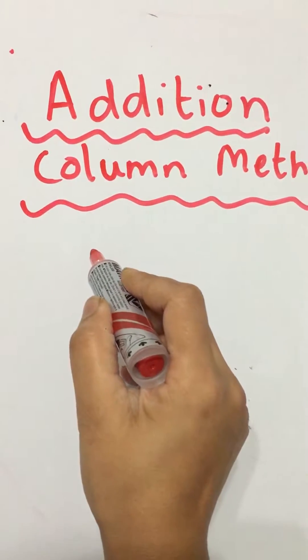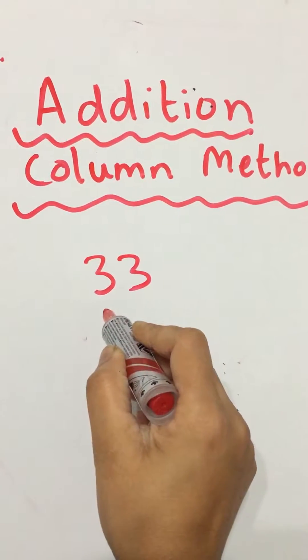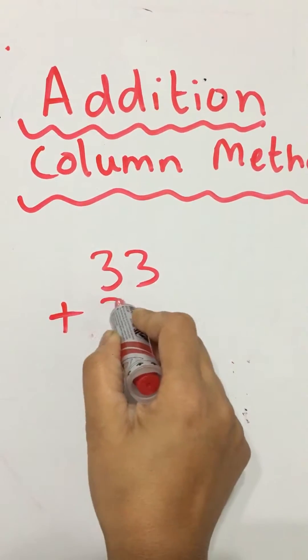Here we're going to use a straightforward example: 33, that's 33, add 21, 2 and 1.